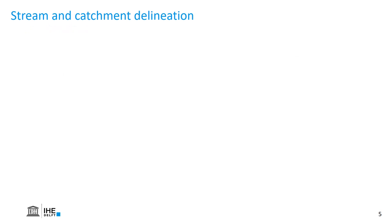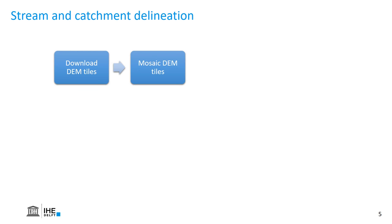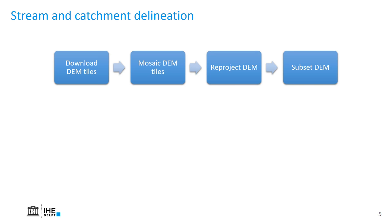So how do we derive streams and catchments from a digital elevation model using GIS? On this slide I'm going to show you the general workflow that's applicable to many GIS desktop software. First we need to acquire the DEM tiles, then mosaic the DEM tiles if our study area is spread over different tiles, reproject the DEM, and subset.